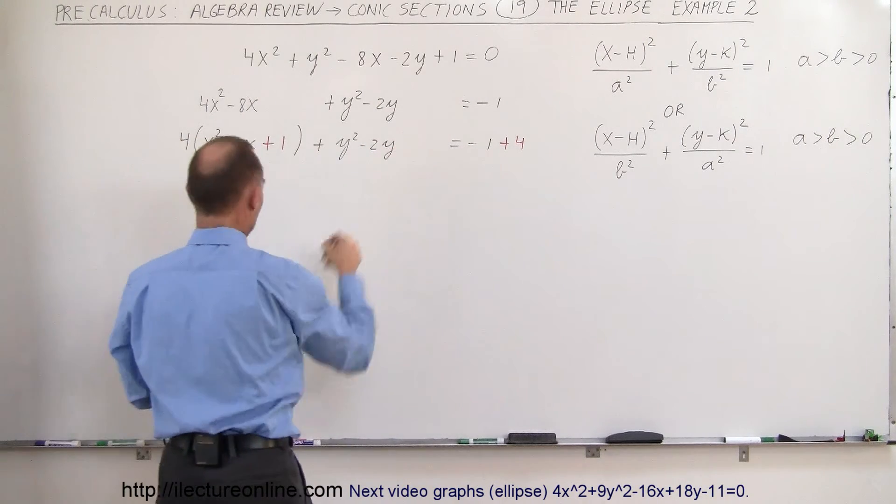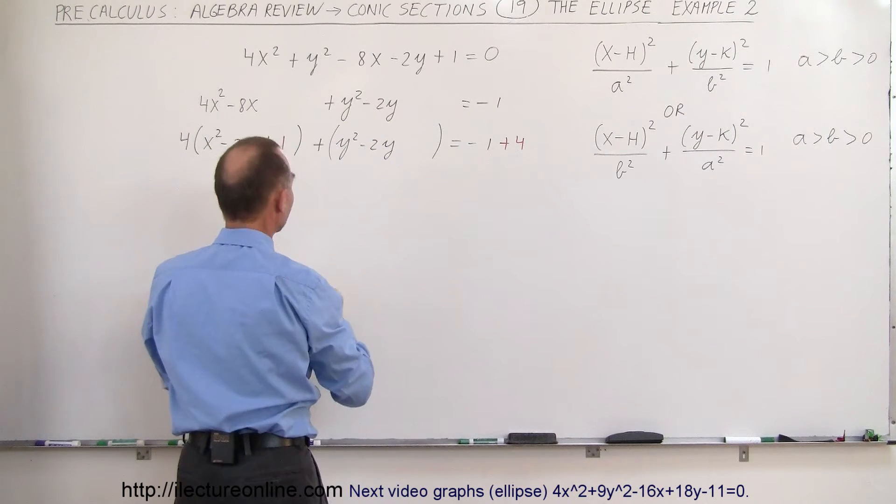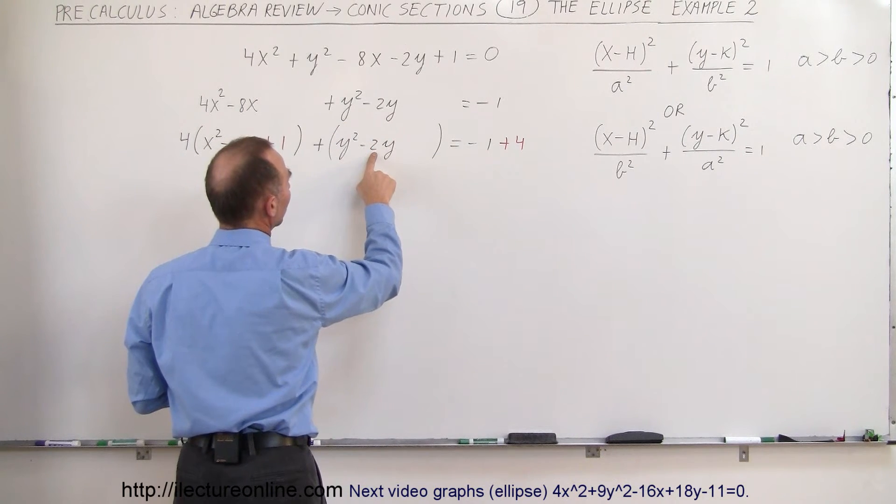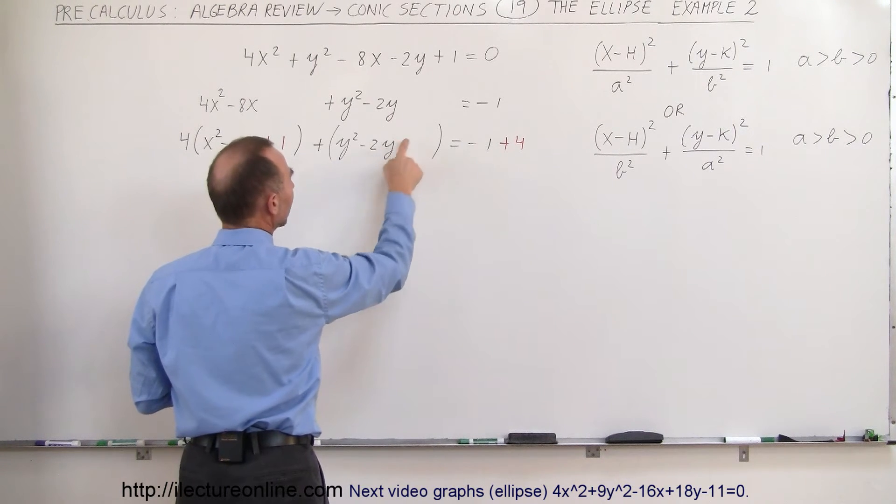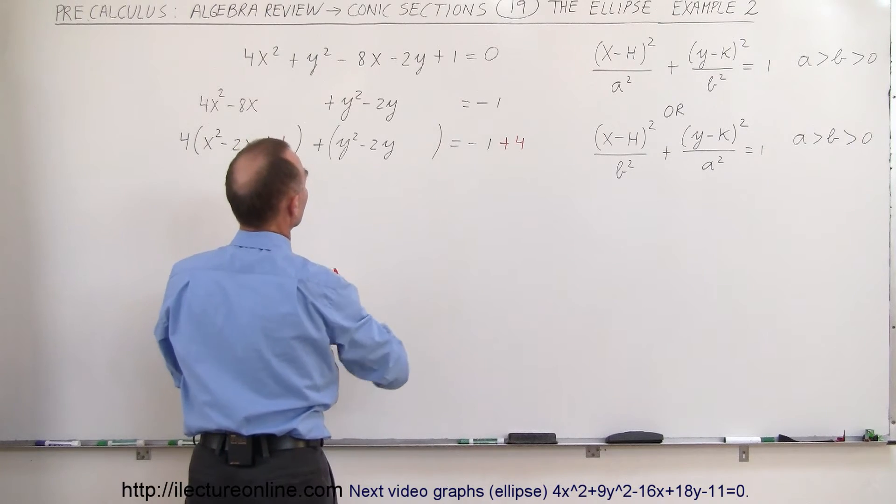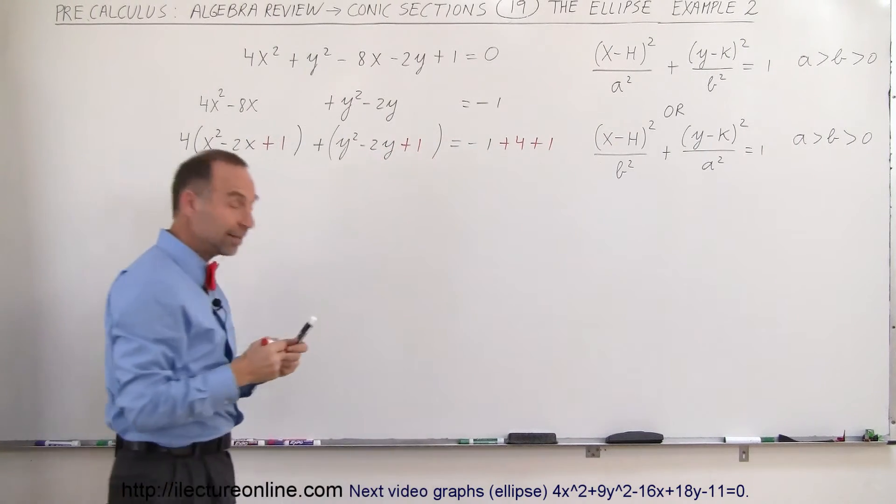Now we also need to have a perfect square over here. Let me put parentheses around that. Notice I take half this number right here which is minus 1, and then I square that I get positive 1. So I'm going to add a plus 1 over here, which means I need to add a plus 1 here as well.